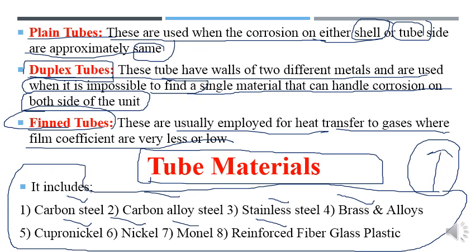Common materials for tubes include carbon steel, carbon alloy steel, stainless steel, brass alloys, copper, nickel, Monel, and reinforced fiberglass. In the next lecture, we will study calculations for heat exchangers — formulas and concepts including fouling factor, overall heat transfer coefficient, overall area, number of hairpins required for a given service, annulus diameter, annulus area, and pipe area — covering the thermal and process design of double pipe heat exchangers. After that, shell and tube heat exchangers will be discussed and a problem on double pipe heat exchangers will be solved.